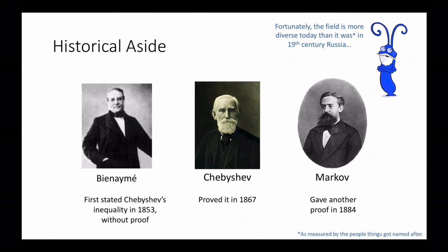While the names Markov and Chebyshev for these inequalities are standard, they're actually historically not quite right. Bienaymé first stated Chebyshev's inequality in 1853, although without proof, and Chebyshev proved it in 1867. Moreover, Markov's inequality was known to these folks before Markov was even born in 1856. Markov was actually Chebyshev's student, and he gave a different proof of Chebyshev's inequality in his thesis in 1884. But for some reason we call Markov's inequality Markov's inequality and Chebyshev's inequality Chebyshev's inequality, and it's stuck.